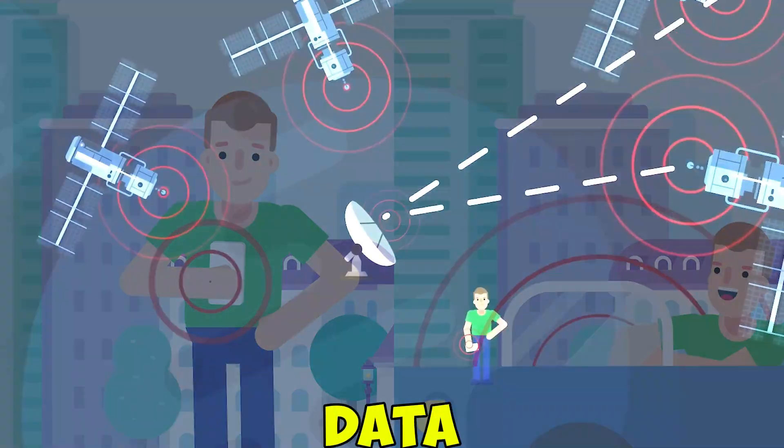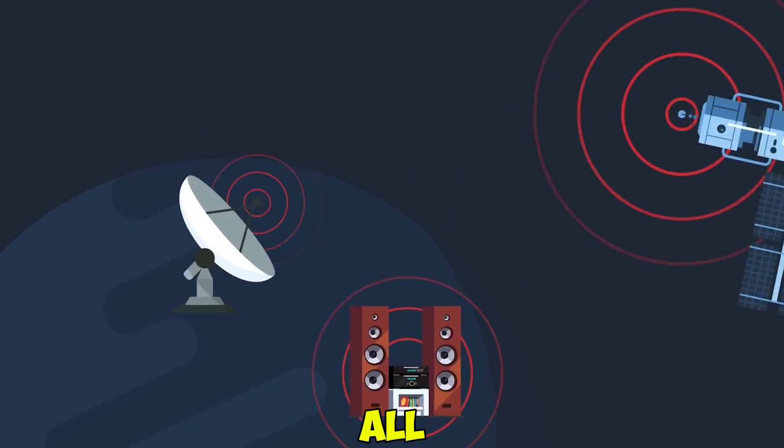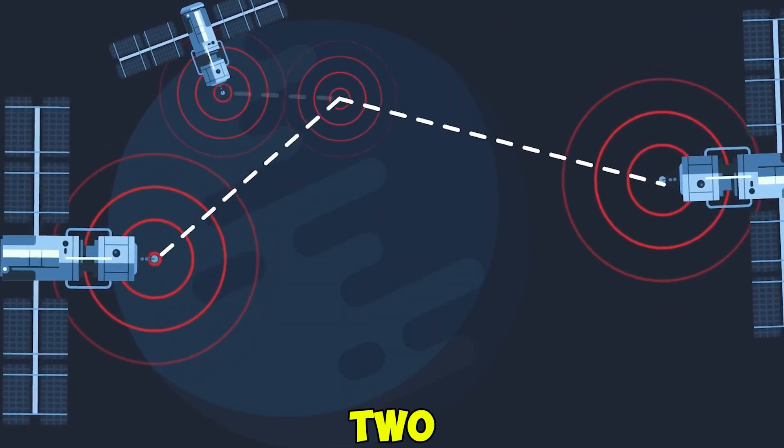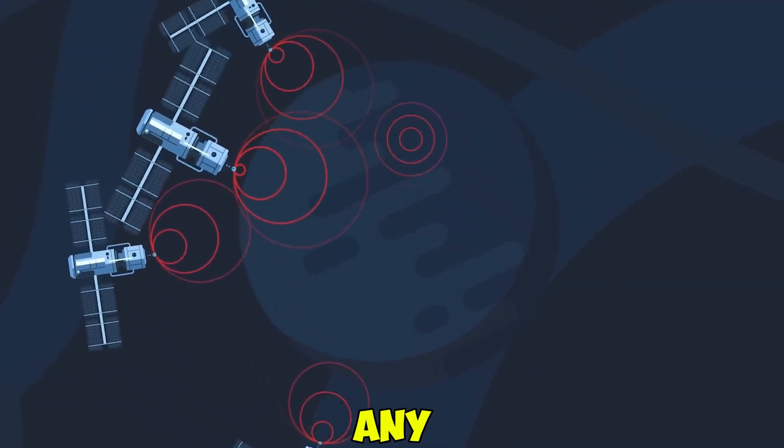Have you ever wondered why GPS needs data from at least four satellites to find your exact location? Well, it all comes down to precision. With just three satellites, we can narrow it down to two possible locations. But to be absolutely sure, we need a fourth satellite to eliminate any errors.